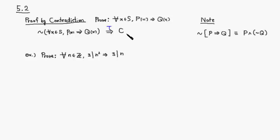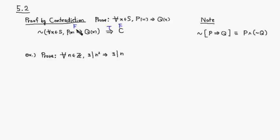This true implication implies a contradiction C. Remember that a contradiction is always false. So in order to have a true implication with a conclusion that is always false, you have to have a false hypothesis. But remember that this hypothesis is just the negation of what we want to show — if the negation is false, then the original statement must be true. That's the logic behind proof by contradiction.